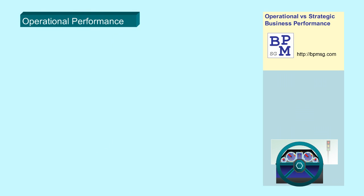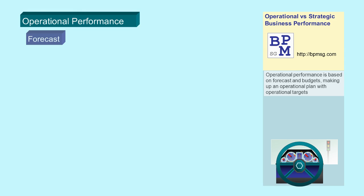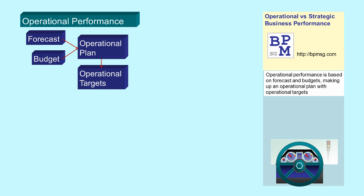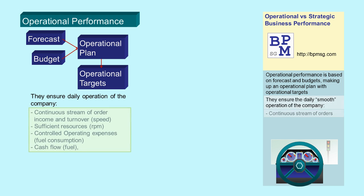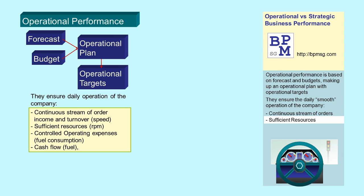Operational performance is based on forecasts and budgets, making up an operational plan with operational targets. They ensure the daily smooth operation of the company: continuous stream of order income and turnover (speed), sufficient resources (RPM), controlled operating expenses (fuel consumption), and cash flow (fuel).